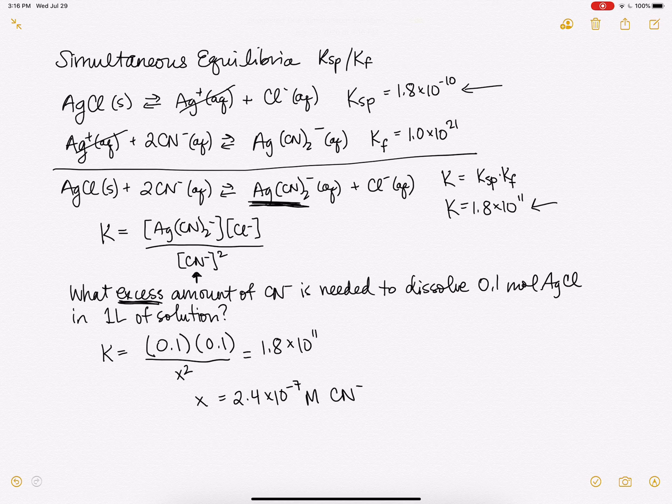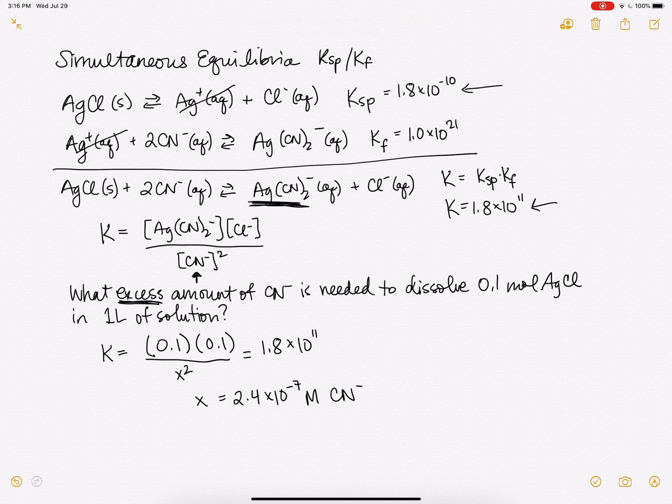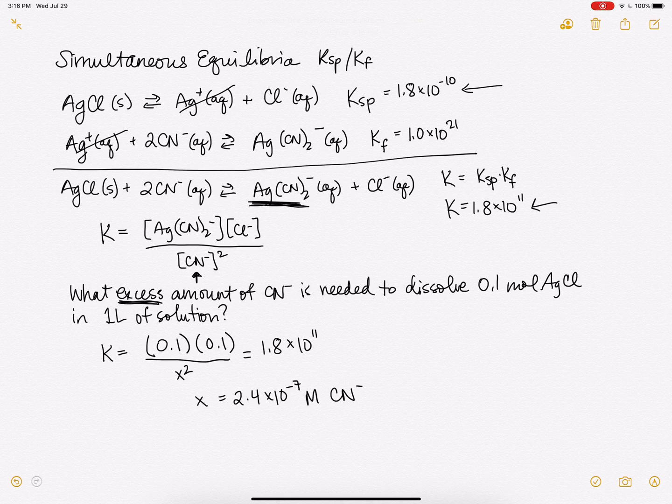And then we can start to think about what this equilibrium means. One thing that we might notice is that our silver chloride is dramatically more soluble in cyanide than it is in plain water, because we have this 10 to the 11th instead of 10 to the minus 10th for our k.